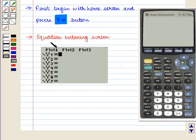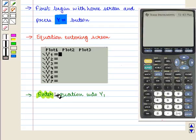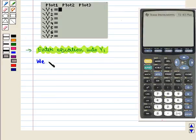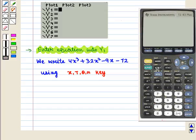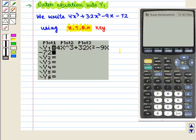This takes us to the equation entering screen where we will write our equation. Now let us enter the equation into Y1. Here we write the equation 4x cubed plus 32x squared minus 9x minus 72 using X,T,θ,n key. After writing this equation we will get this screen.